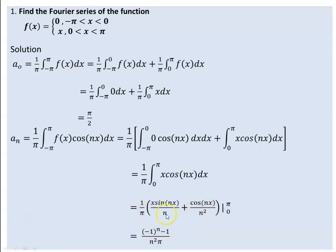We see that cosine(nπ) equals minus 1 to the power of n. When the two parts are equal, we put them together. Your a_n is now obtained to be minus 1 to the power of n, minus 1, over n squared times pi.